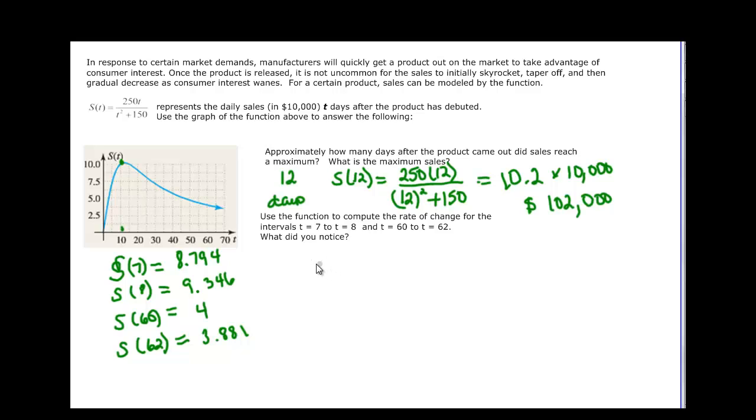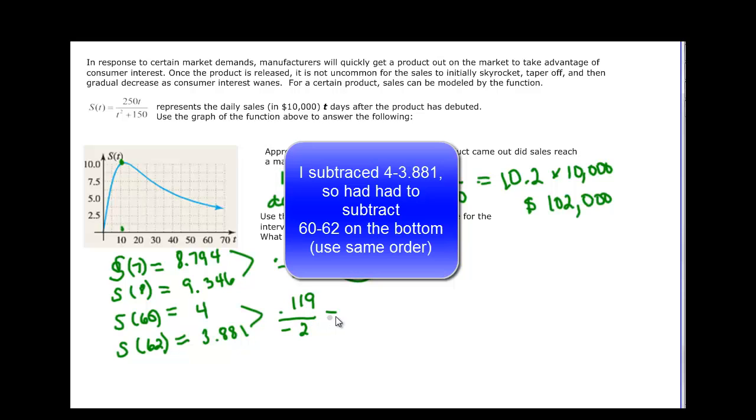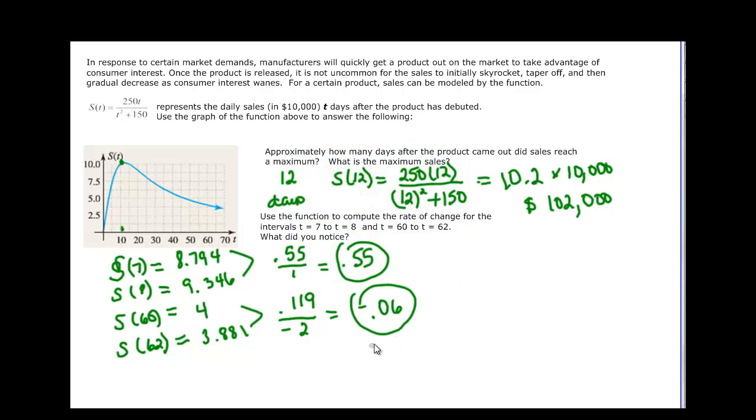The difference here is over 1, so it's 0.55 over 1, or just 0.55. If we do these two, on the top when we take 4 minus 3.881, we get 0.119, and it would be over negative 2 because we're taking 60 minus 62. When we do that, we get negative 0.0595, so we'll call it 0.06. That's the rate of change per day.